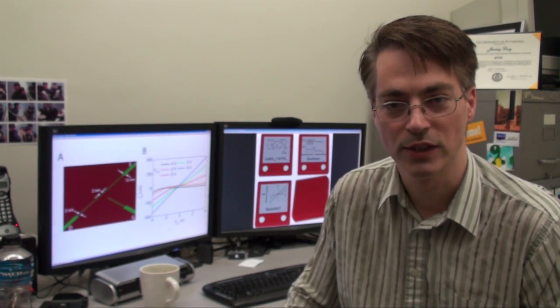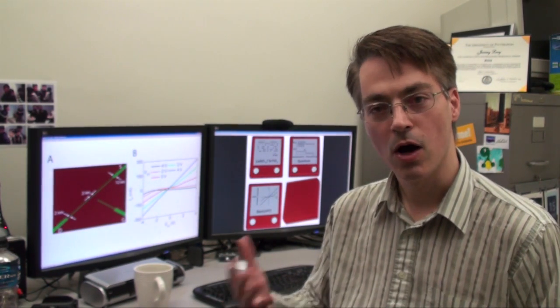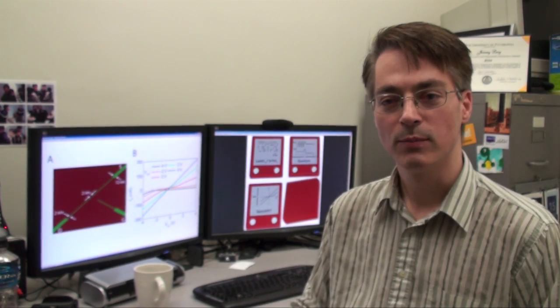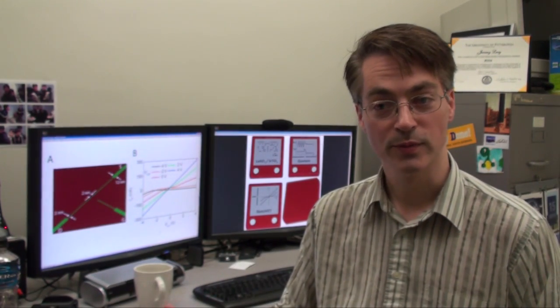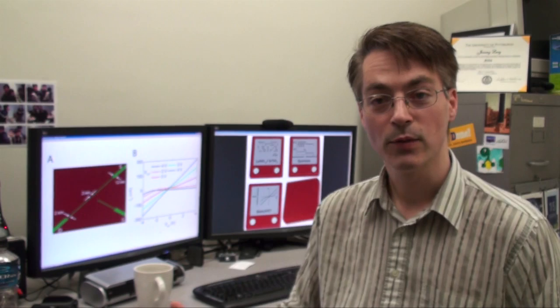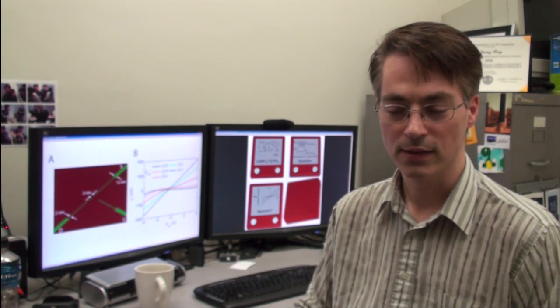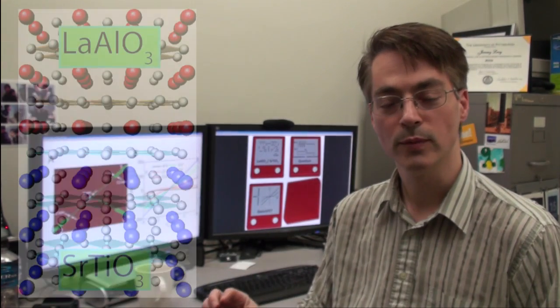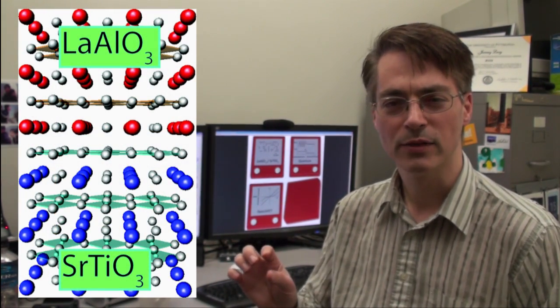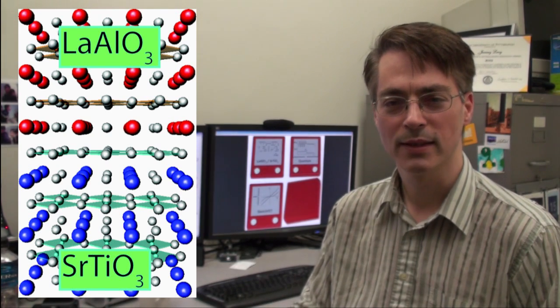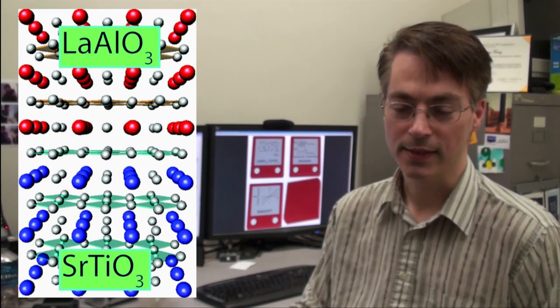We've been working on a system of oxides which have properties very similar to semiconductors and storage materials. The system that we've been looking at contains two different types of oxides. One is lanthanum aluminate, a very thin layer, only 1.2 nanometers, just a few atomic layers, grown on top of another oxide, strontium titanate.